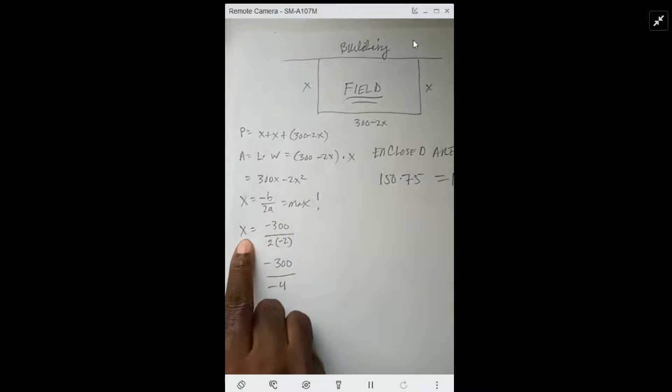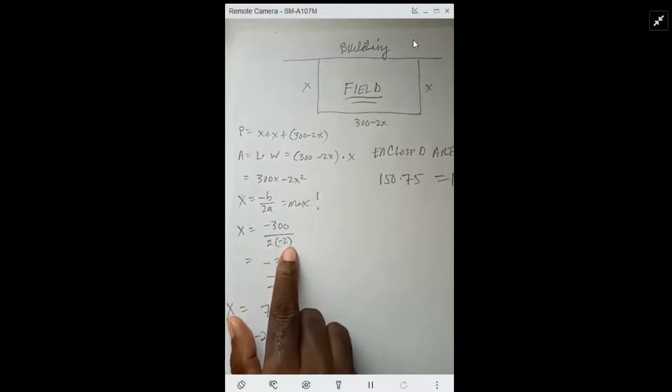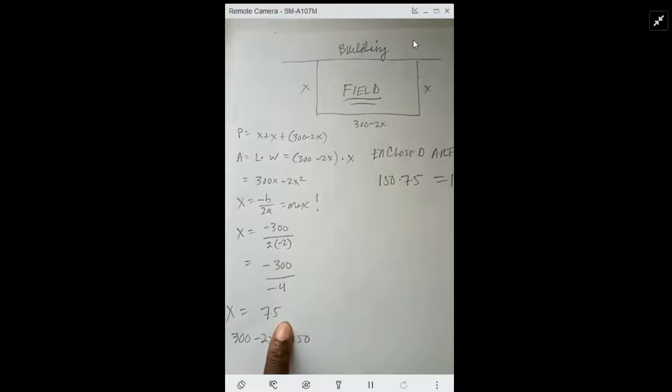When we work that out we have negative 300 over 2 times negative 2. That's just going to give us x equals 75. That's the short length of the field.